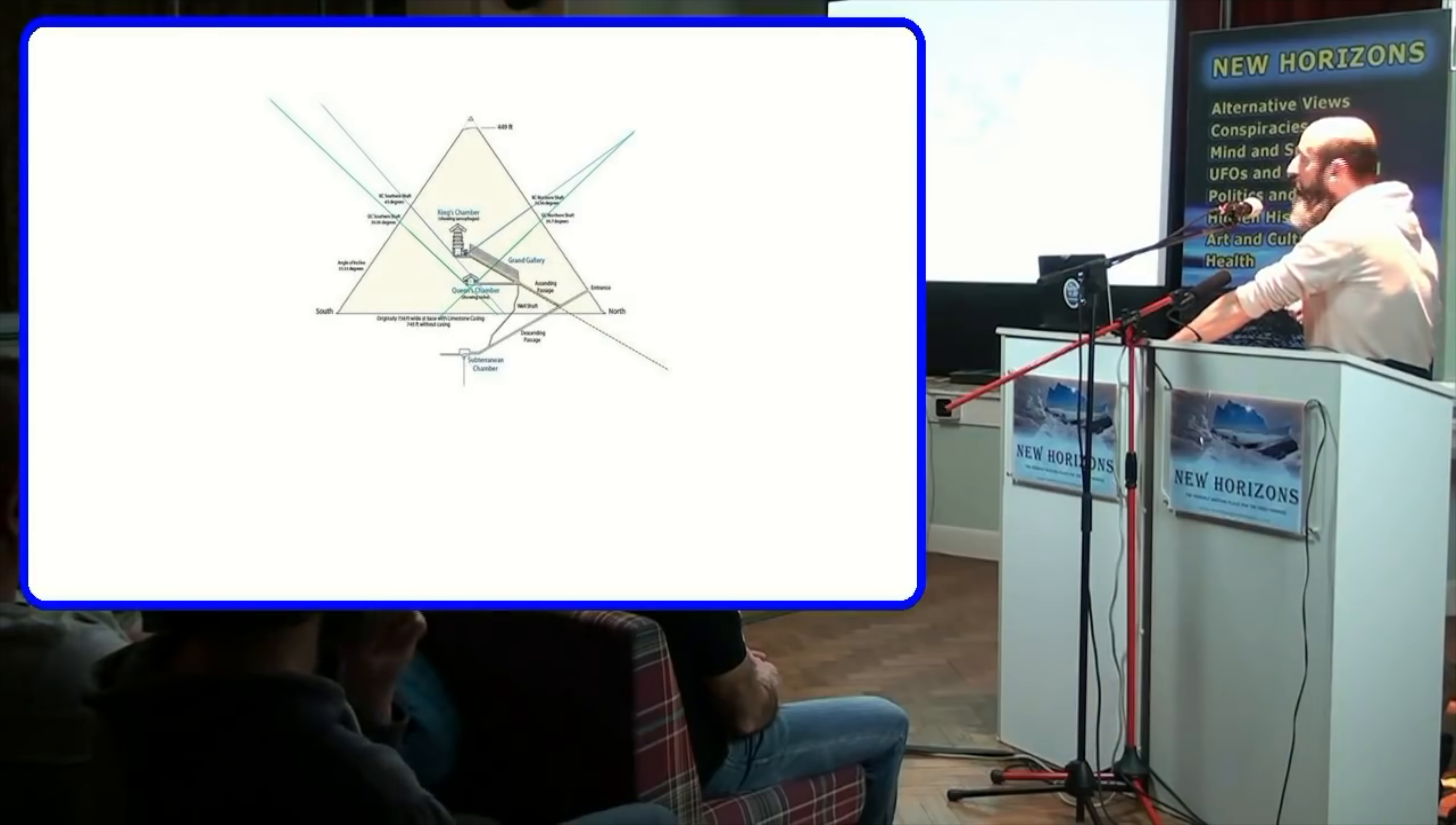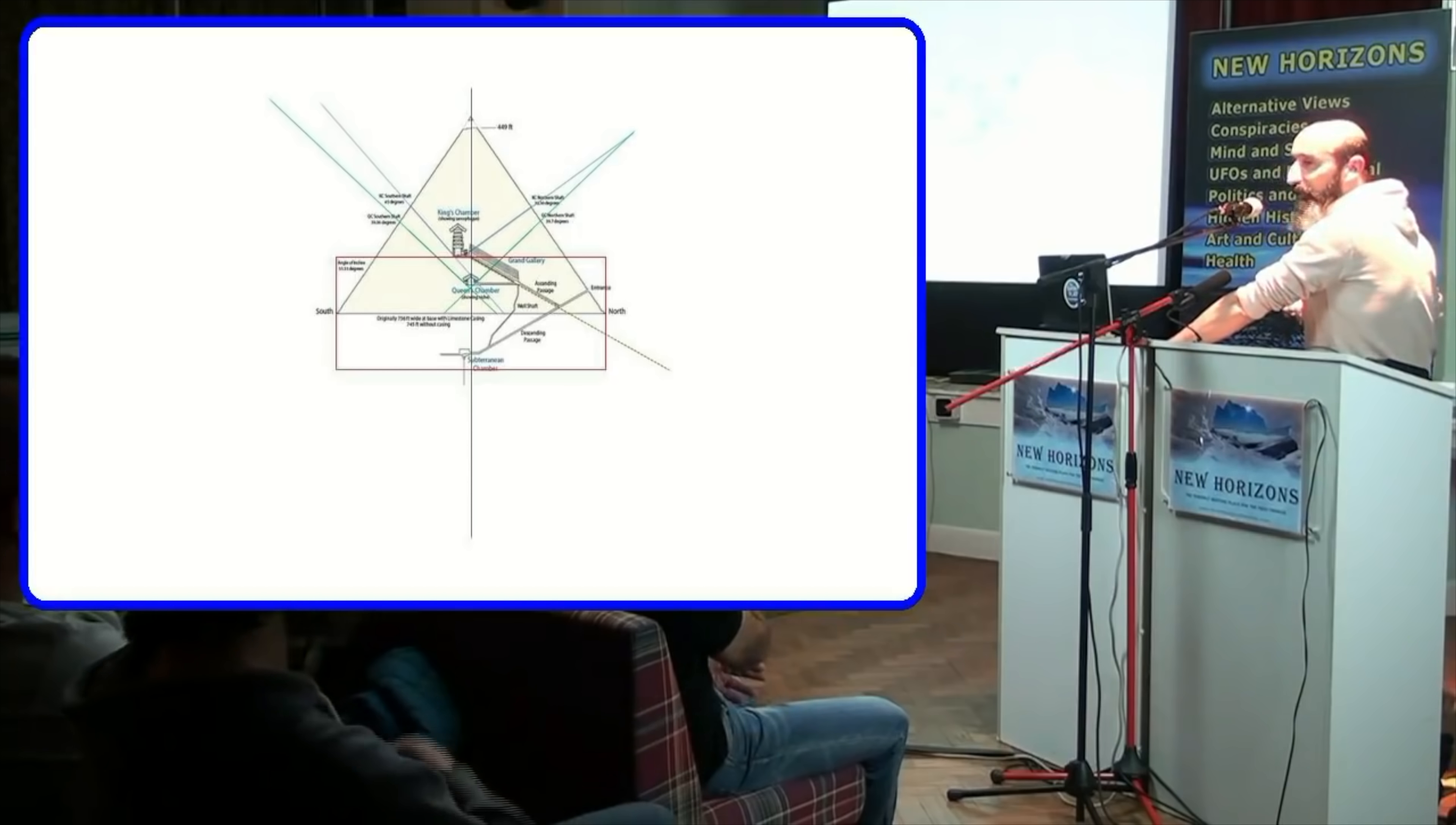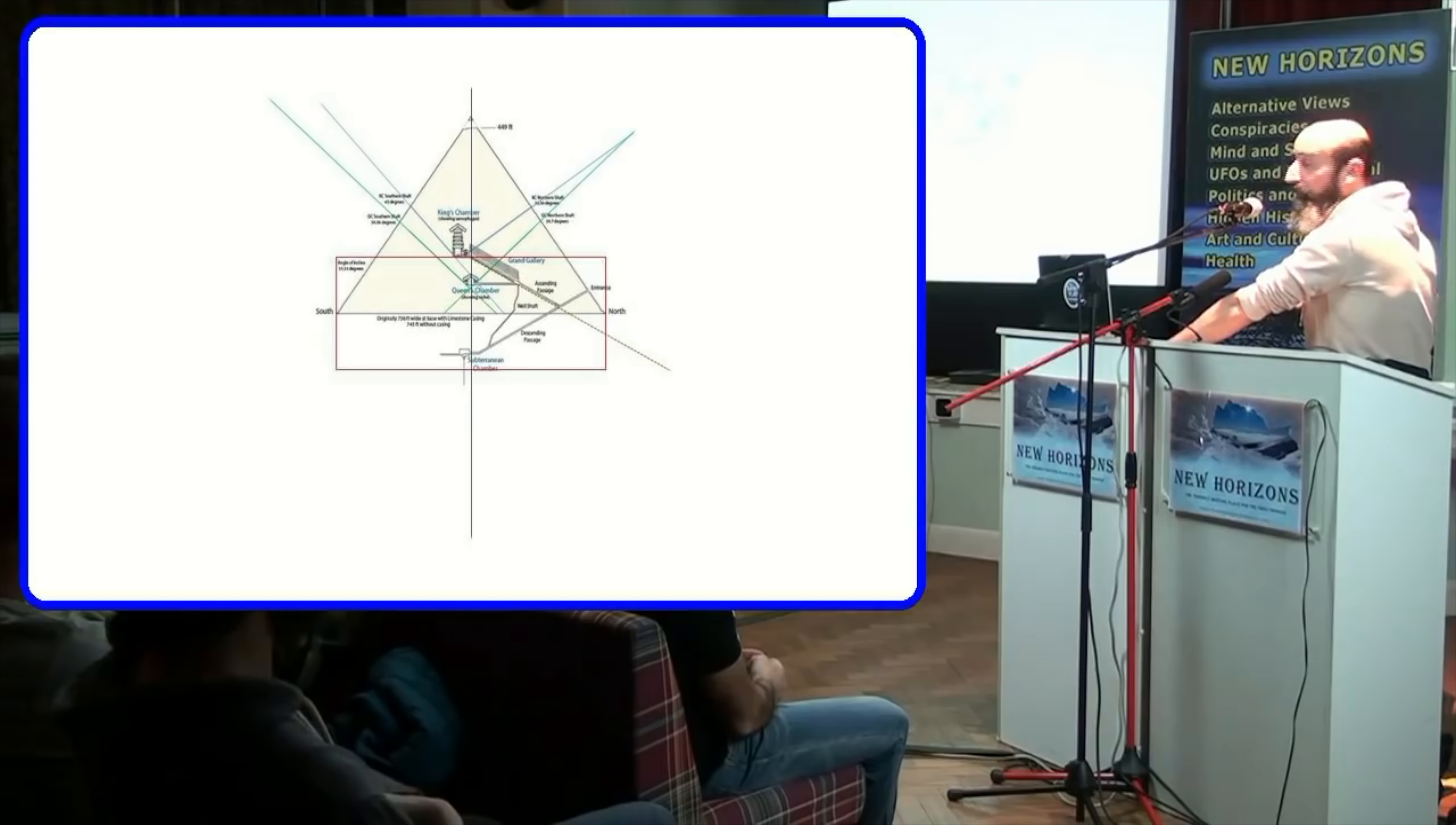I'm just using common sense and reasoning. I believe that the whole thing was built for its geometry, simply for its geometry. We know that pi is represented in a lot of its measurements, and phi, the golden ratio. They went to great lengths to build this building and make it geometrically and geographically accurate.